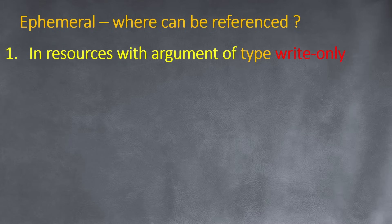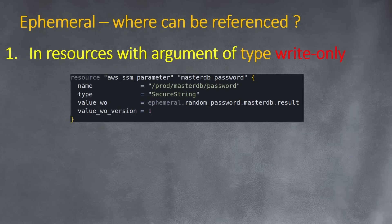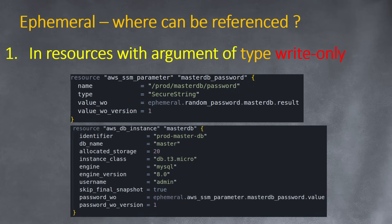First, in resources with an argument of type write_only. This write_only argument was introduced in Terraform 1.11, which is why I recommend using 1.11. As an example, to store an SSM parameter, instead of just specifying value you reference the new attribute called value_write_only. You can only reference ephemeral variables there. Also required is a version attribute — this is just a version for Terraform so it knows when to trigger an update, not an actual AWS version.